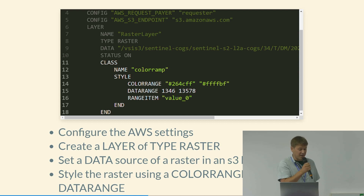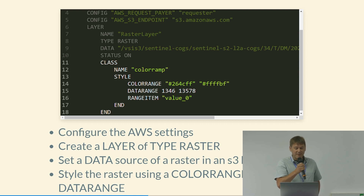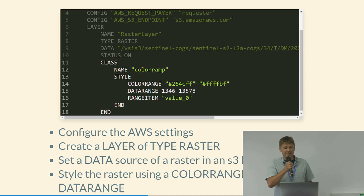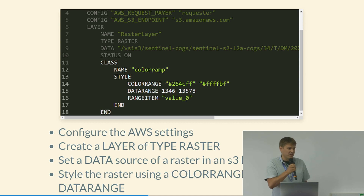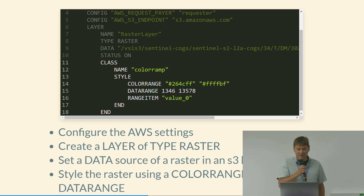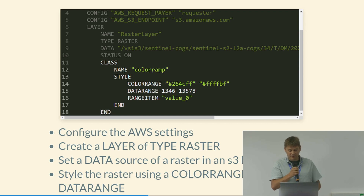It's using a color ramp — it takes a range of colors with a starting and ending color and applies that to a data range. You can have your data hosted in S3 buckets and render it all on the fly using MapServer.